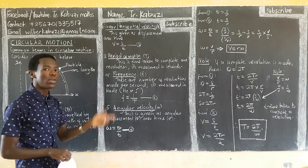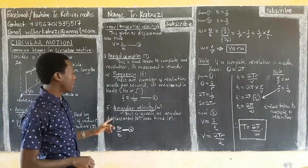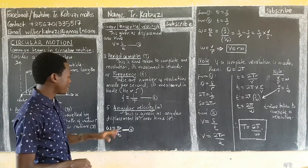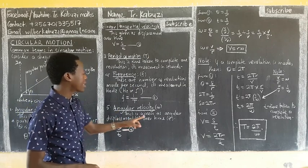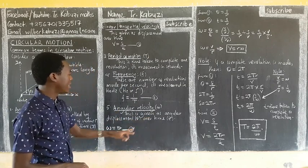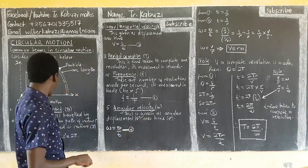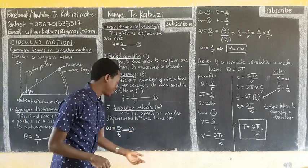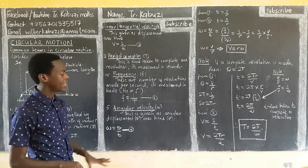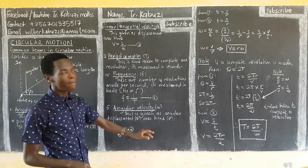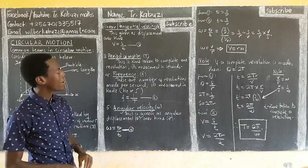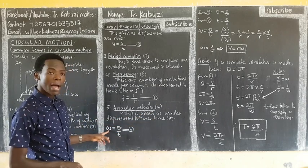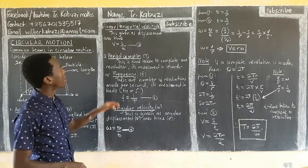Angular velocity, denoted omega, is given as angular displacement theta over time T — that is equation four. Now let's look at the relationship between omega and linear velocity.